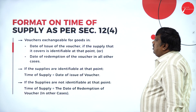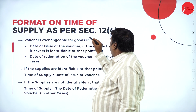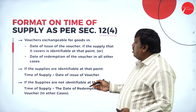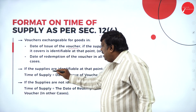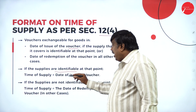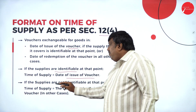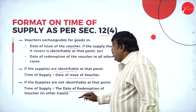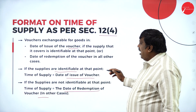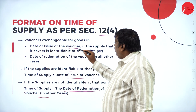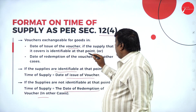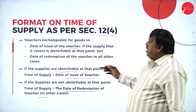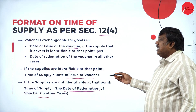Next, the format on time of supply as per Section 12 sub-clause 4, which covers vouchers exchangeable for goods. If the supply is identified at the point of time of issue, then the time of supply is the date of issue of the voucher. If the supply is not identifiable at that point, the time of supply will be the date of redemption of the voucher. We have these two different concepts, and solving a problem will make it easy to understand.